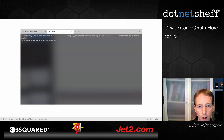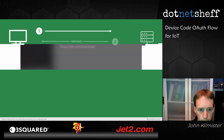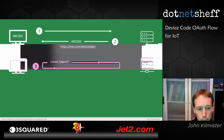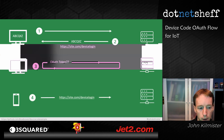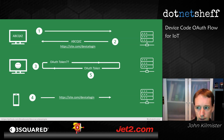Let's take a deeper dive into how we'd implement device code flow. Your application makes a request to the third-party API, which sends back a URL and a code. Your app then continually polls that API asking for the auth token — it keeps coming back saying it's still pending. Meanwhile, your end user on their mobile phone visits the site, enters the code, and at that point your app will eventually get the OAuth token back.